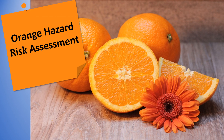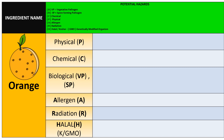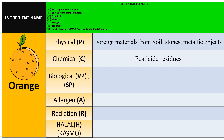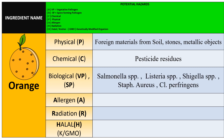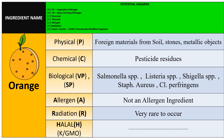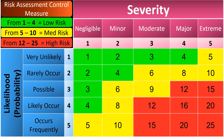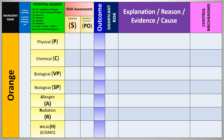Now let's write the examples for orange, water, and air. Start the orange hazard risk assessment with brainstorming from the HACCP team. Physical hazards from orange include foreign materials: soil, stones, or metallic objects. Chemical hazards include pesticide residues. Biological hazards may include Salmonella, Listeria, Shigella, and Clostridium. Orange is not an allergen; radiation is very rare; and halal is not applicable. Remember: low risk is 1–4, medium risk is 5–10, and high risk is 12–25.